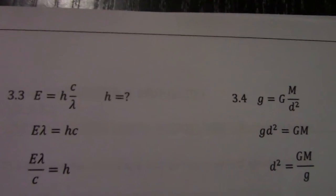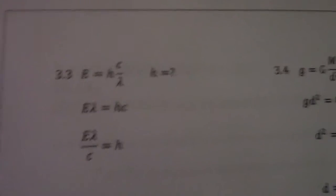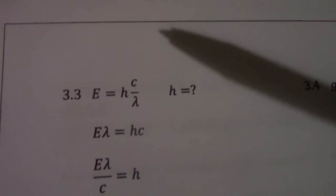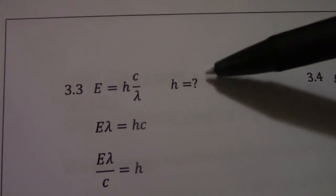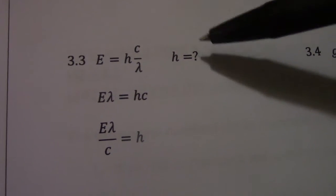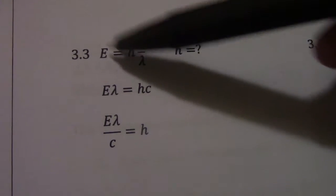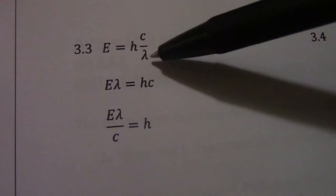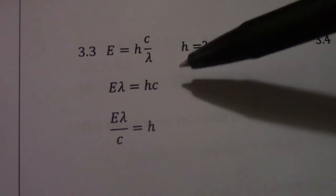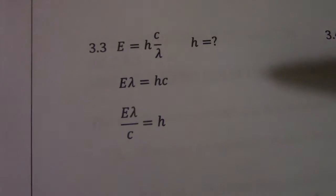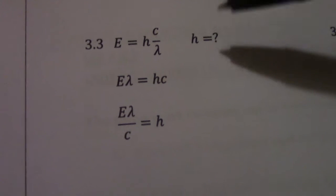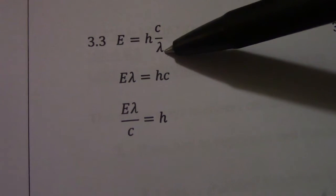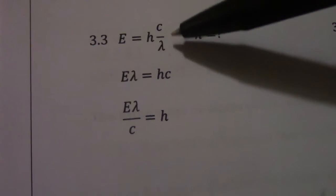So if I go to 3.3 now I am bringing in some division and this is where the confusion tends to stand. There they want me to make h the subject of formula. So here energy equals h times c divided by lambda. C is speed of light. Lambda, that is constant. They want h so I first need to get rid of everything attached to h.